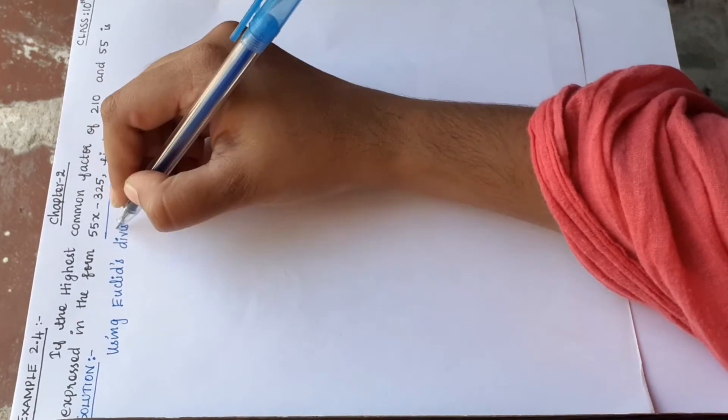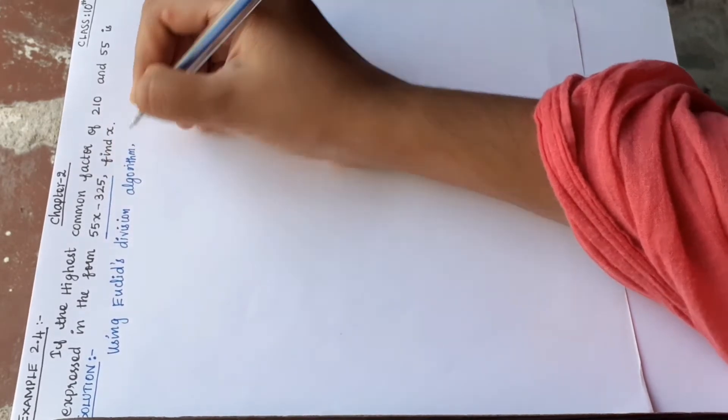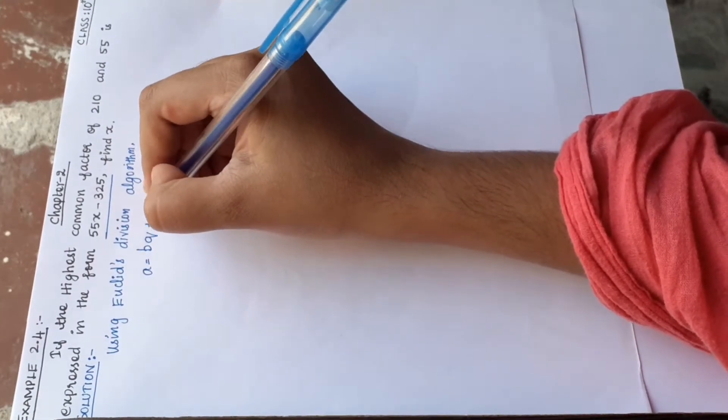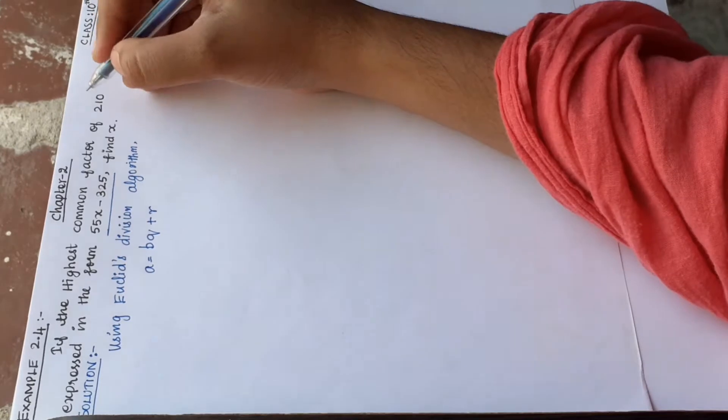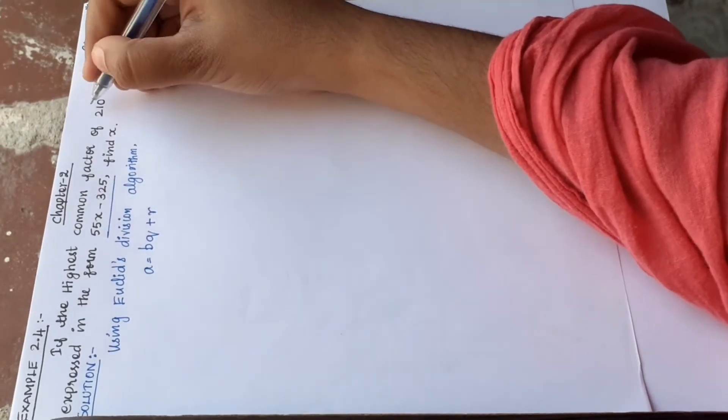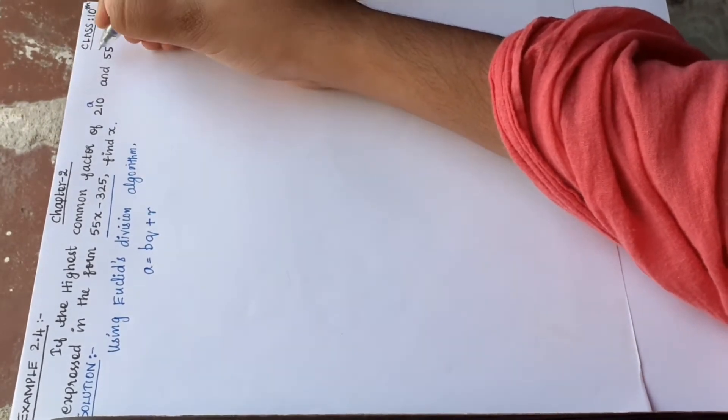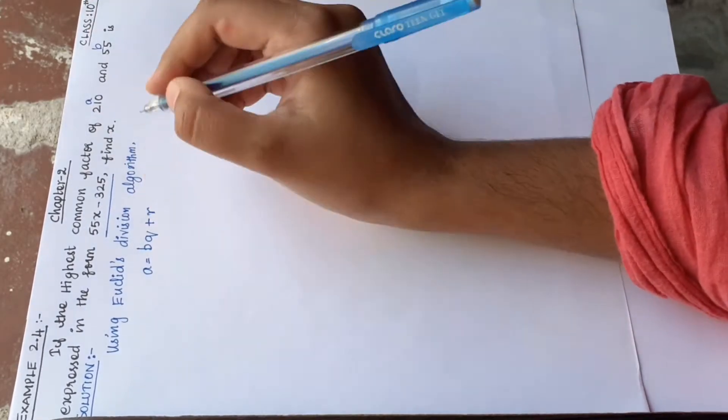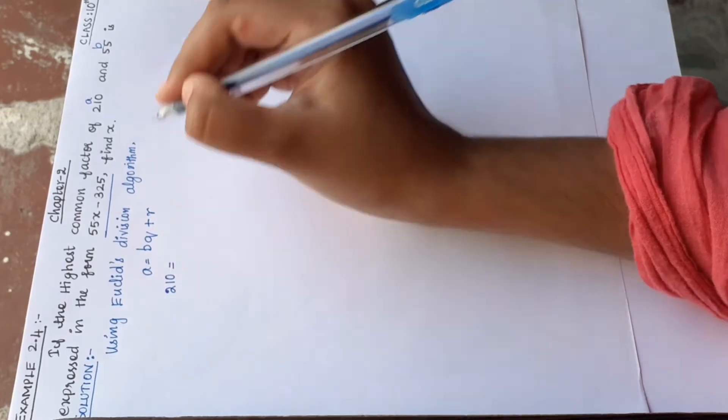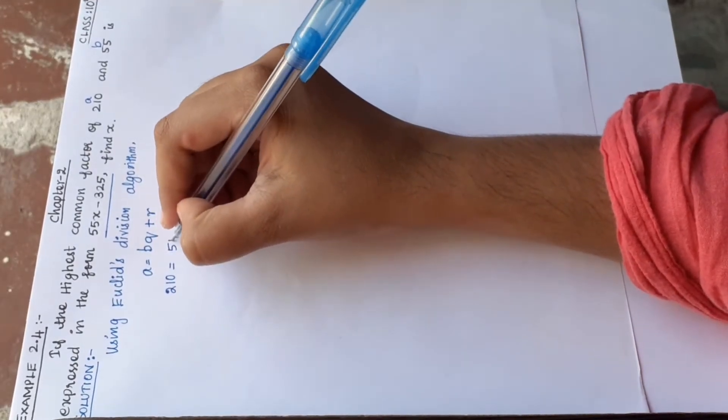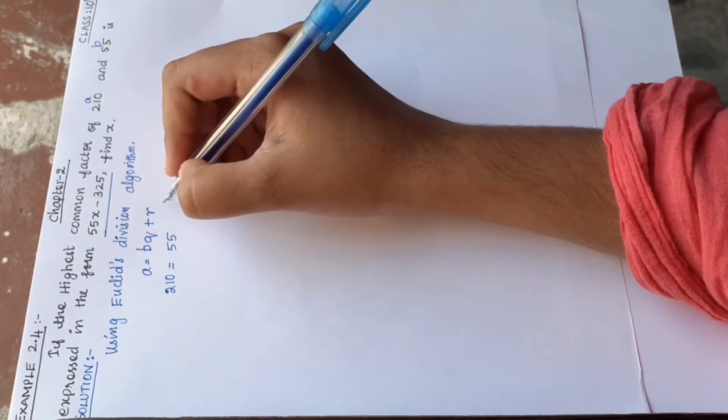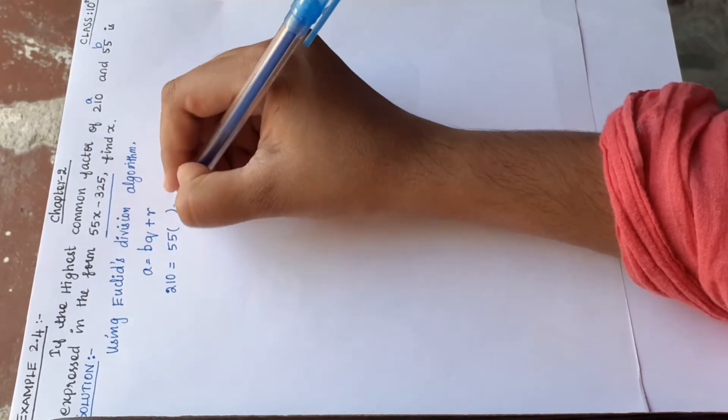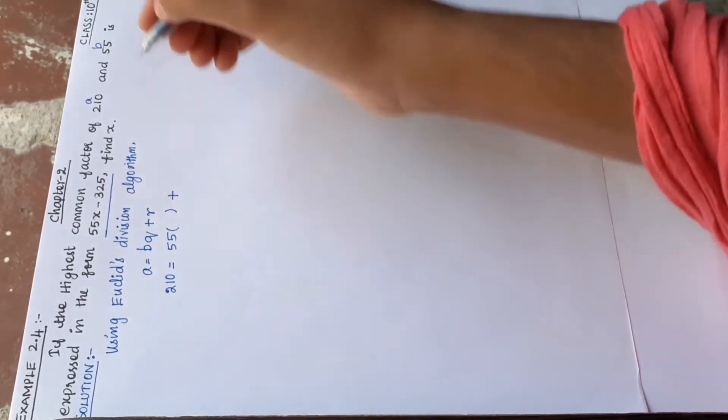Already covered in previous sums, Euclid's division lemma: A equals BQ plus R. So here we have two numbers, the greater number A and B. Now A equals 210 and B equals 55. We need to find Q, the quotient, and R, the remainder.